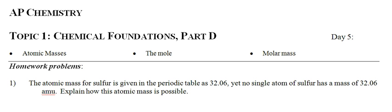It says the atomic mass for sulfur is given in the periodic table as 32.06, and what's not given there is units, which is grams per mole. Yet no single atom of sulfur has a mass of 32.06 AMUs. Explain how this atomic mass is possible.